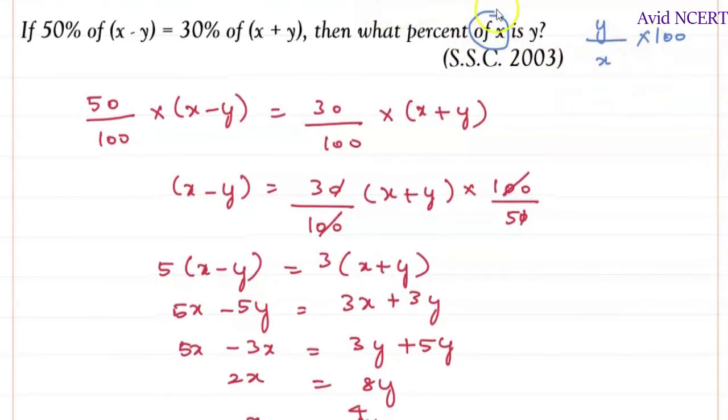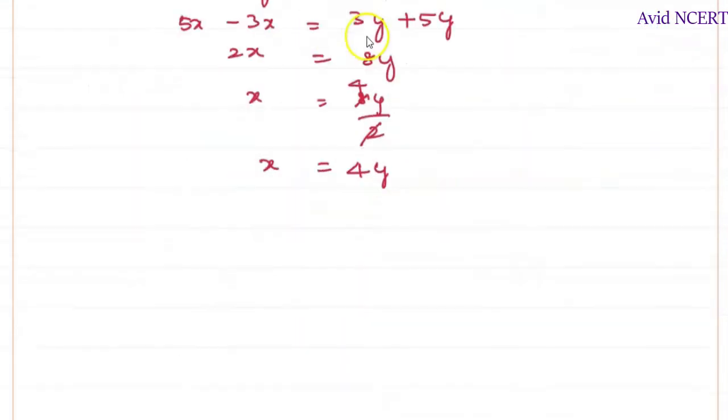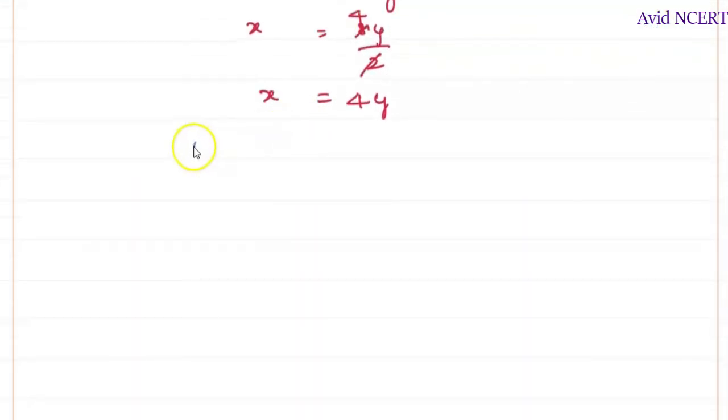So we have to substitute the values in this, y by x times 100. So here it is, y by x times 100, which equals y as it is, x is 4y times 100.